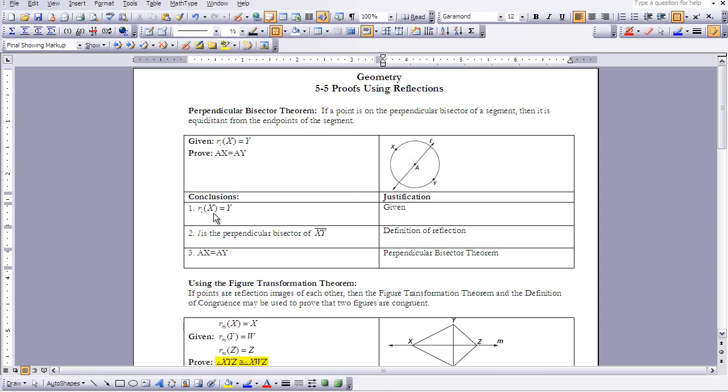The first part, I'm just rewriting the given. Second part, L is the perpendicular bisector of segment XY. We know that if points have been reflected, the reflecting line is the perpendicular bisector of the segment formed by the points that were reflected. That's the definition of reflection.